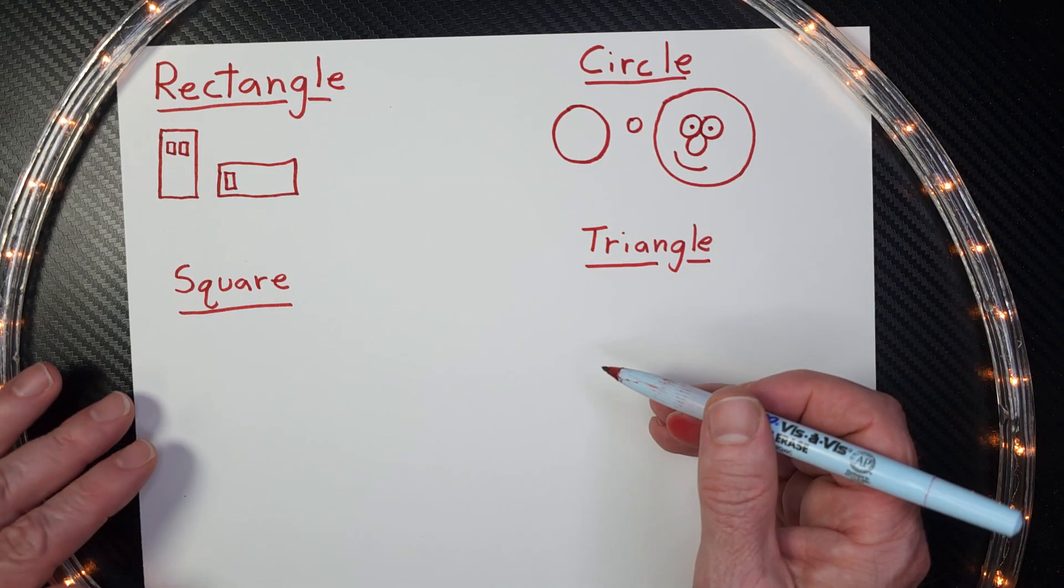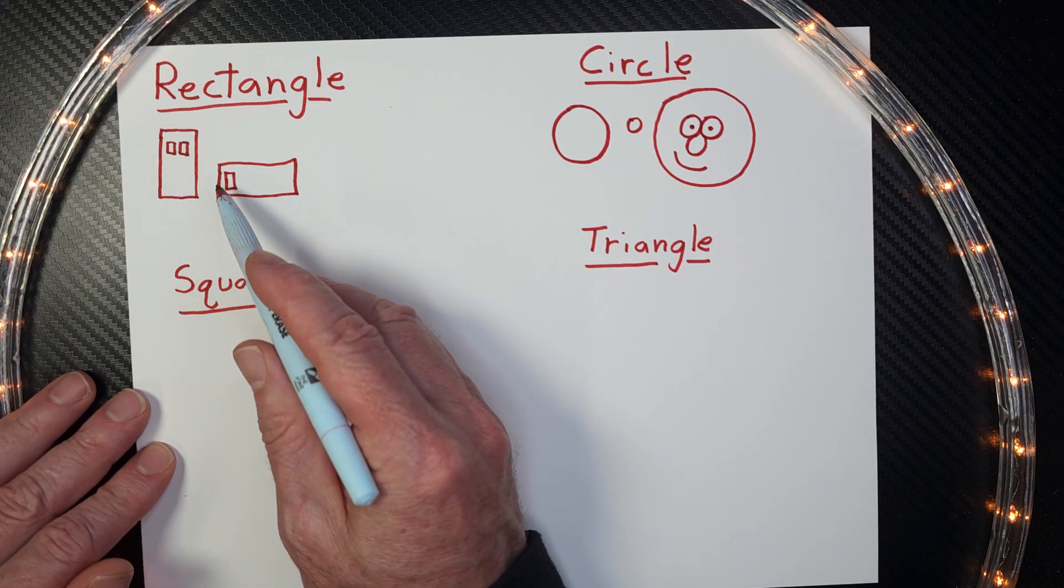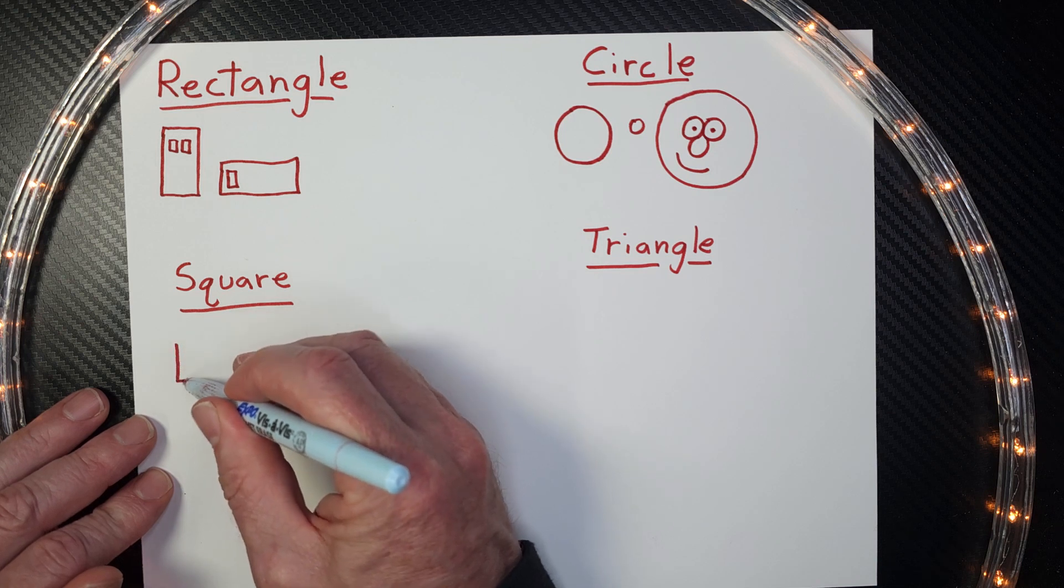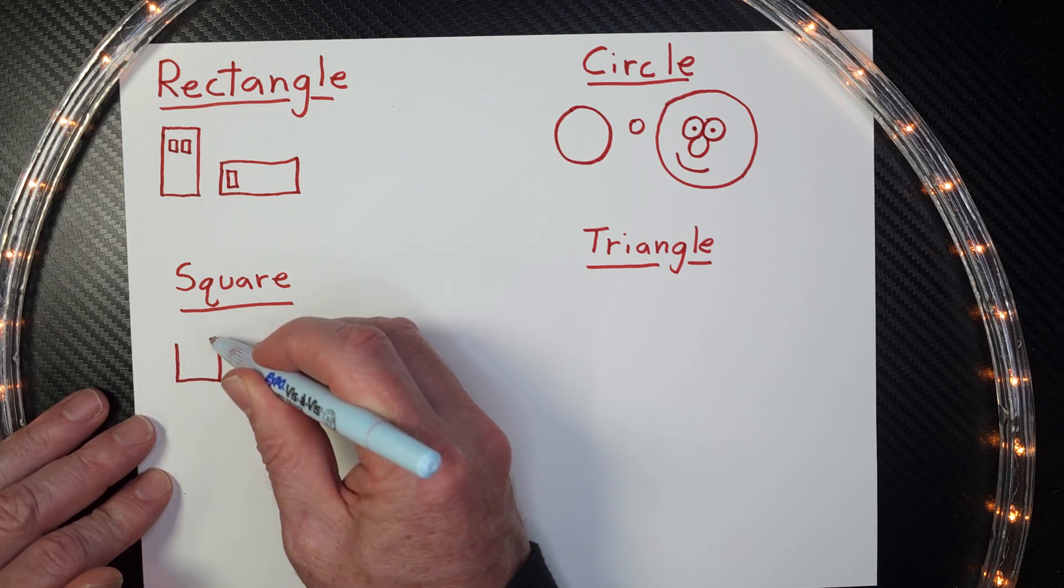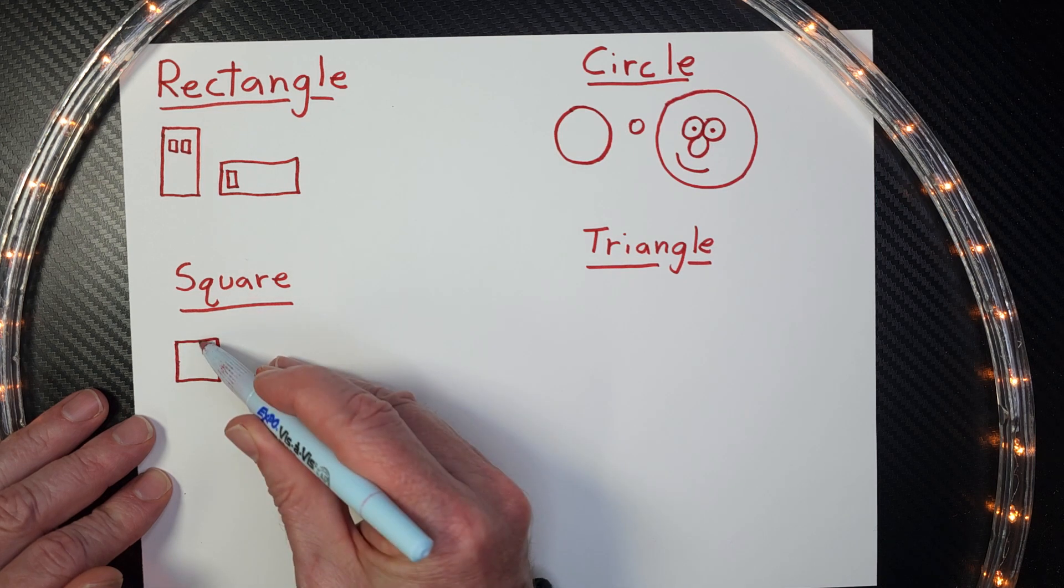All right, let's go ahead and take a look at a square. A square is almost like a rectangle, but it has four equal sides. So each side is the same. This is a square. It has one, two, three, four.